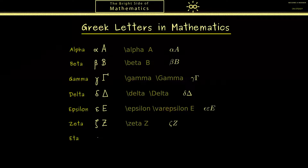The next letter on the list is eta. The lowercase one looks like this, and the capital one is just an H. This is how it works in LaTeX.